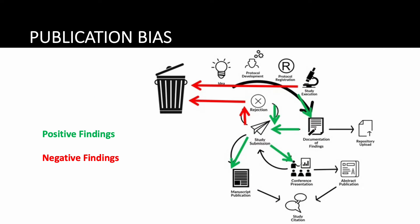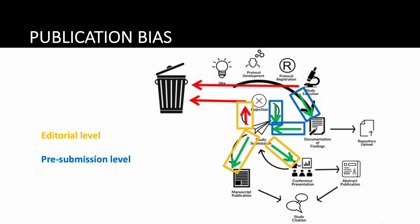Publication bias can result from selective reporting of positive findings at any step between project completion and presentation or publication. I like to divide the potential sources into two levels: pre-submission factors, such as the author's decision to write up, submit, or resubmit; or editorial-level factors, which is the decision to accept or reject submitted studies. Preference towards positive studies at either level can lead to research waste with disproportionate loss of negative studies.